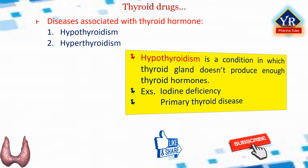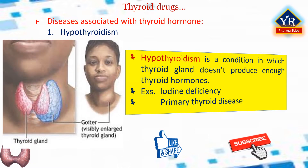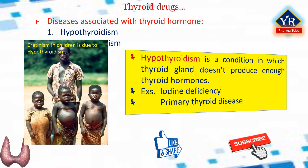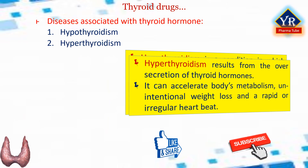Diseases associated with both inadequate production and overproduction of thyroid hormones are hypothyroidism and hyperthyroidism respectively. Hypothyroidism is a condition in which the thyroid gland is not capable of producing enough thyroid hormones. Two well-known examples include iodine deficiency and primary thyroid disease. In case of iodine deficiency, the thyroid becomes inordinately large and is called a goiter. The most severe and devastating form of hypothyroidism is seen in young children with congenital thyroid deficiency. Hyperthyroidism results from over-secretion of thyroid hormones and can accelerate the body's metabolism causing unintentional weight loss and rapid or irregular heartbeat. Drugs used for treating hyperthyroidism are called antithyroid drugs.